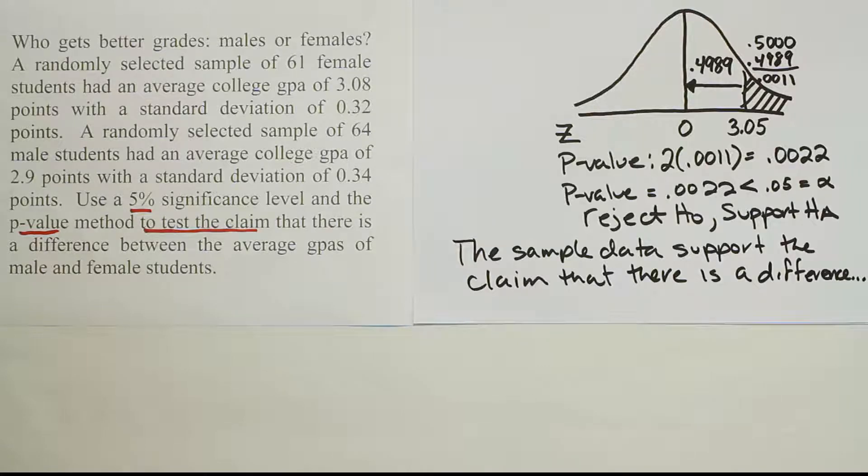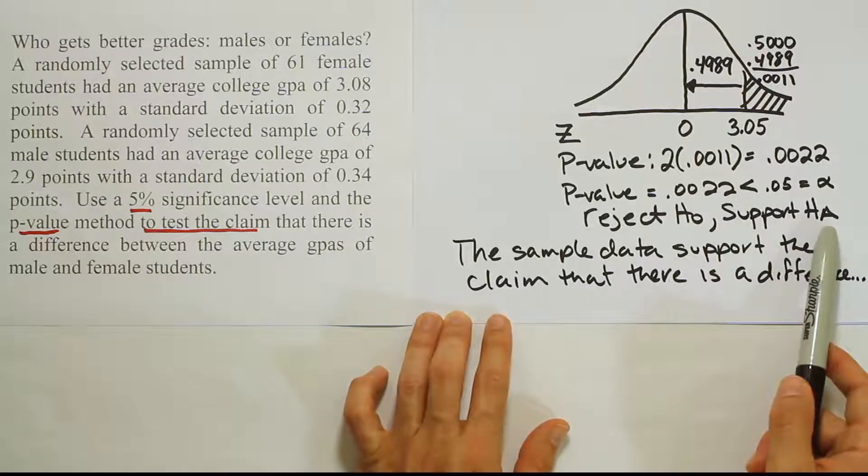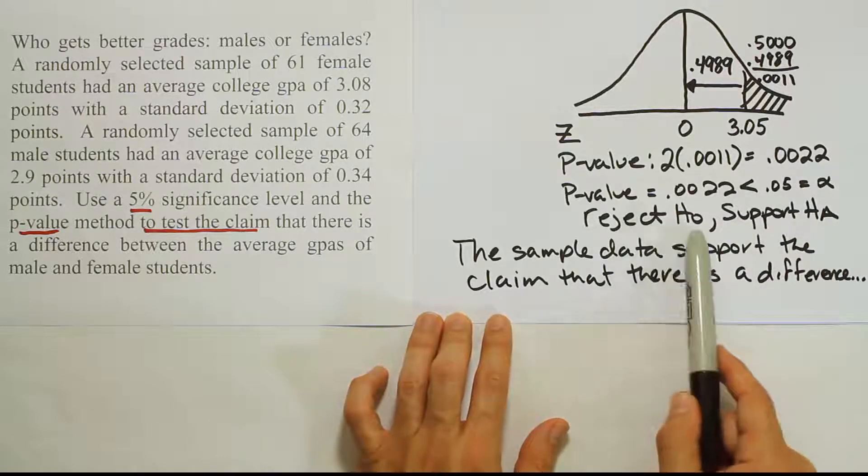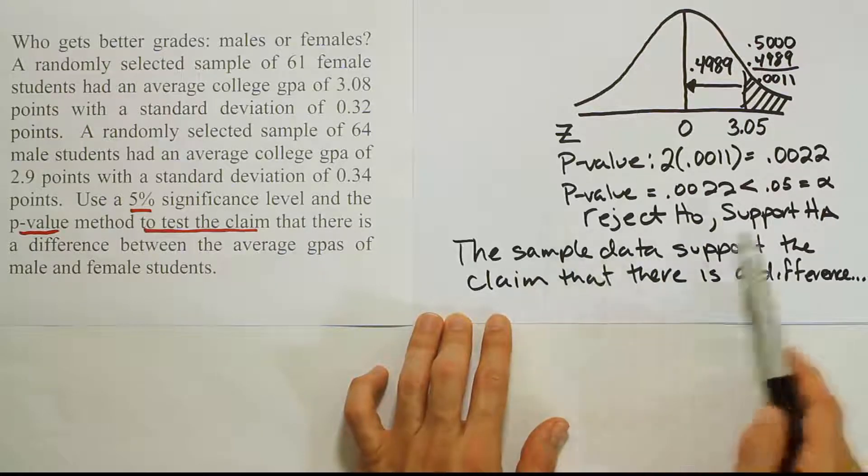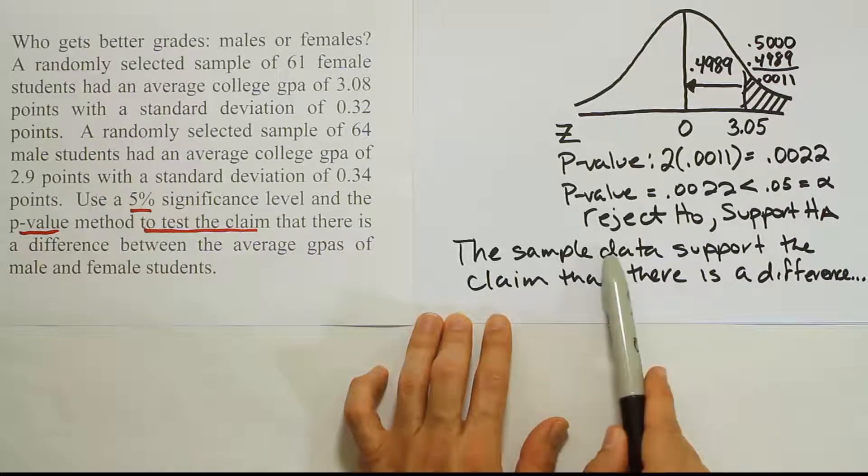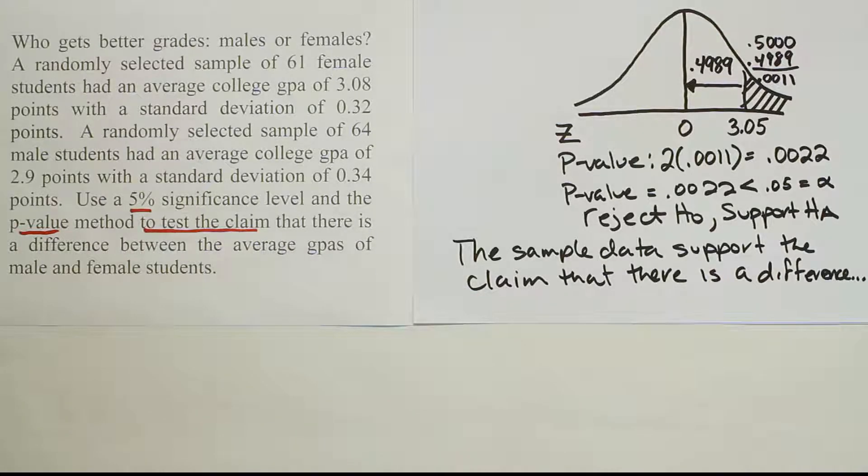Just keep in mind that we use the phrase 'support' here because our original claim was HA. Don't forget that if our original claim had been H0, we would be saying that the sample data allow us to reject the claim. But here, the original claim was HA, so we say the sample data support the claim that there is a significant difference between female GPAs and male GPAs.